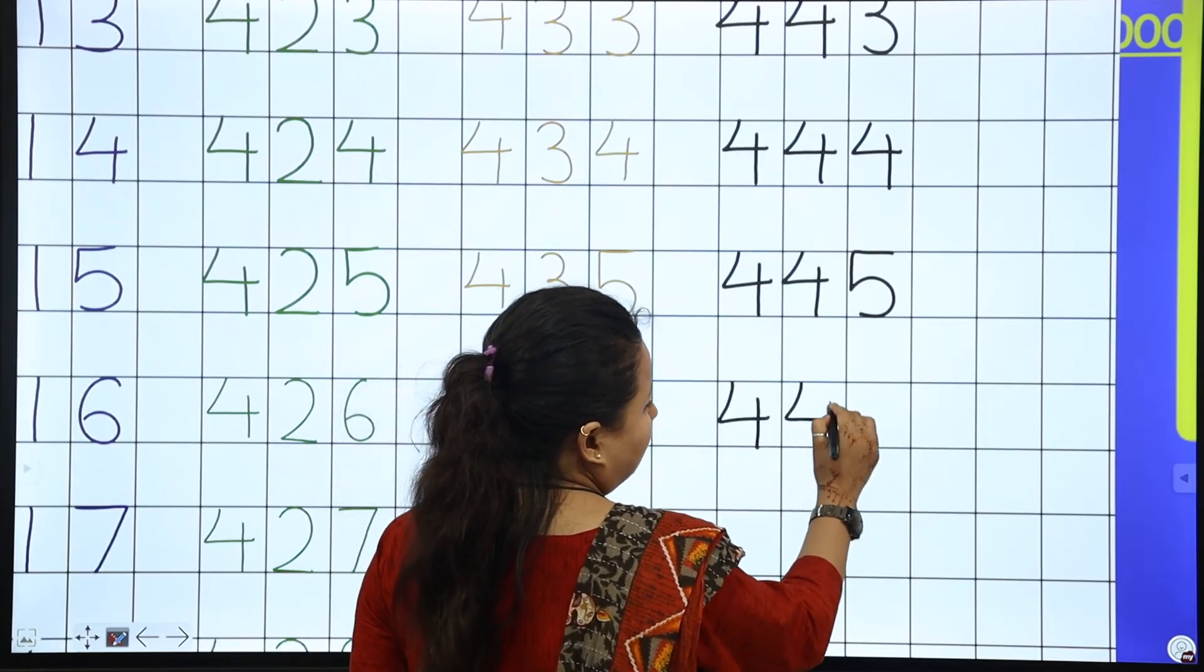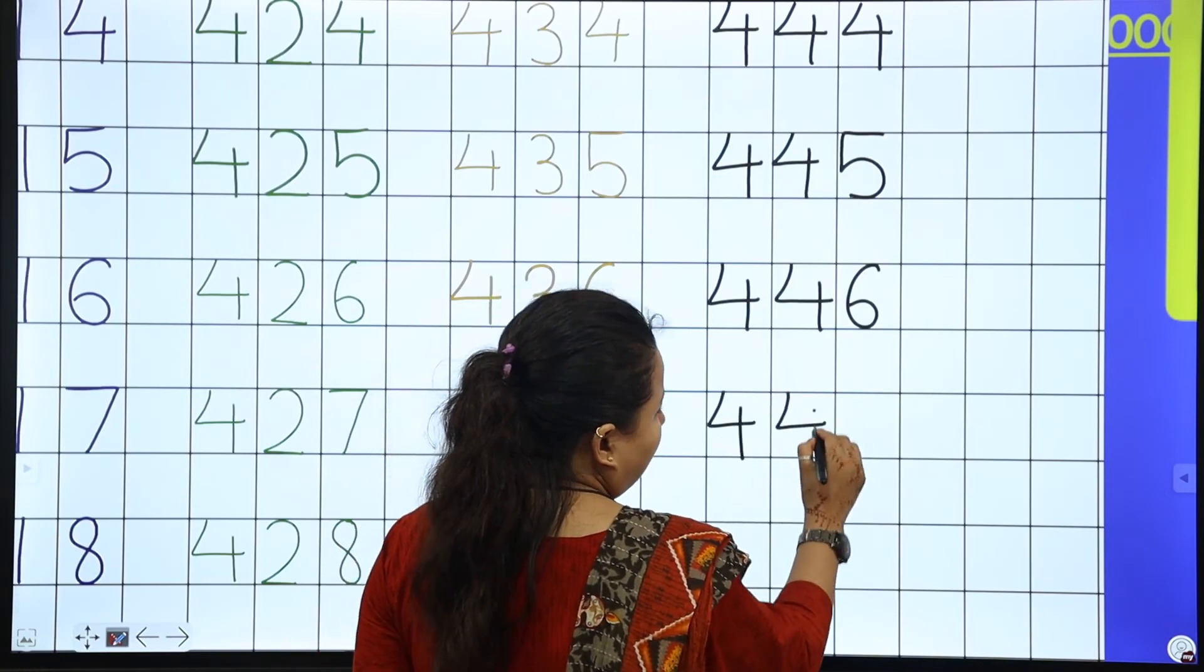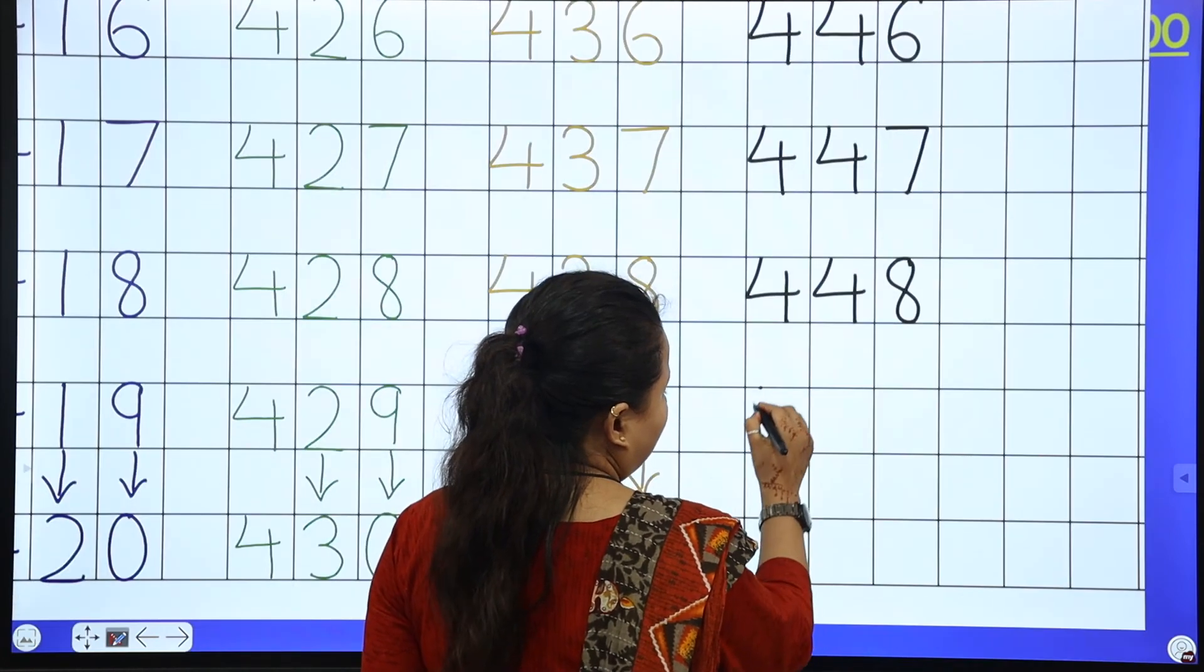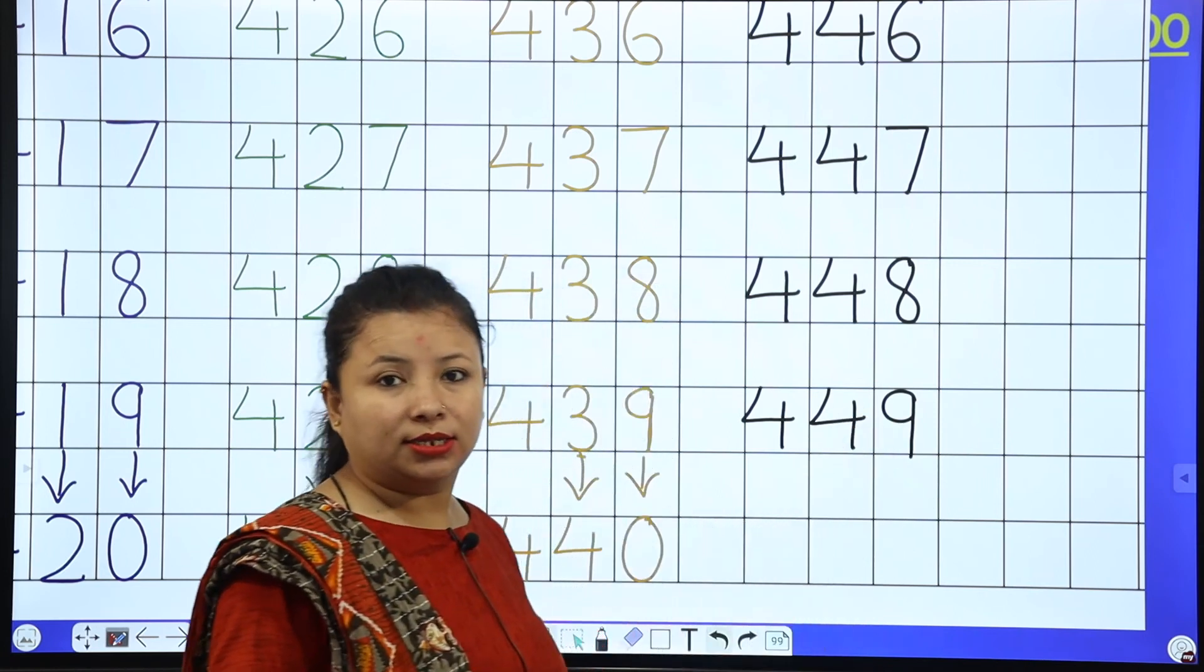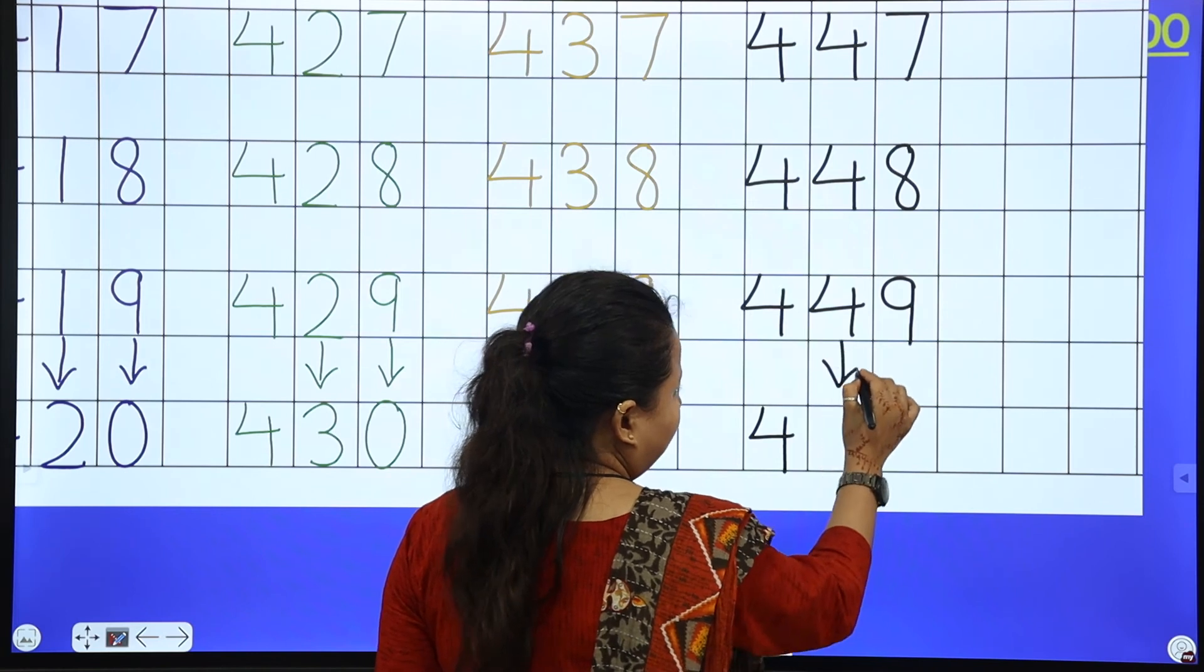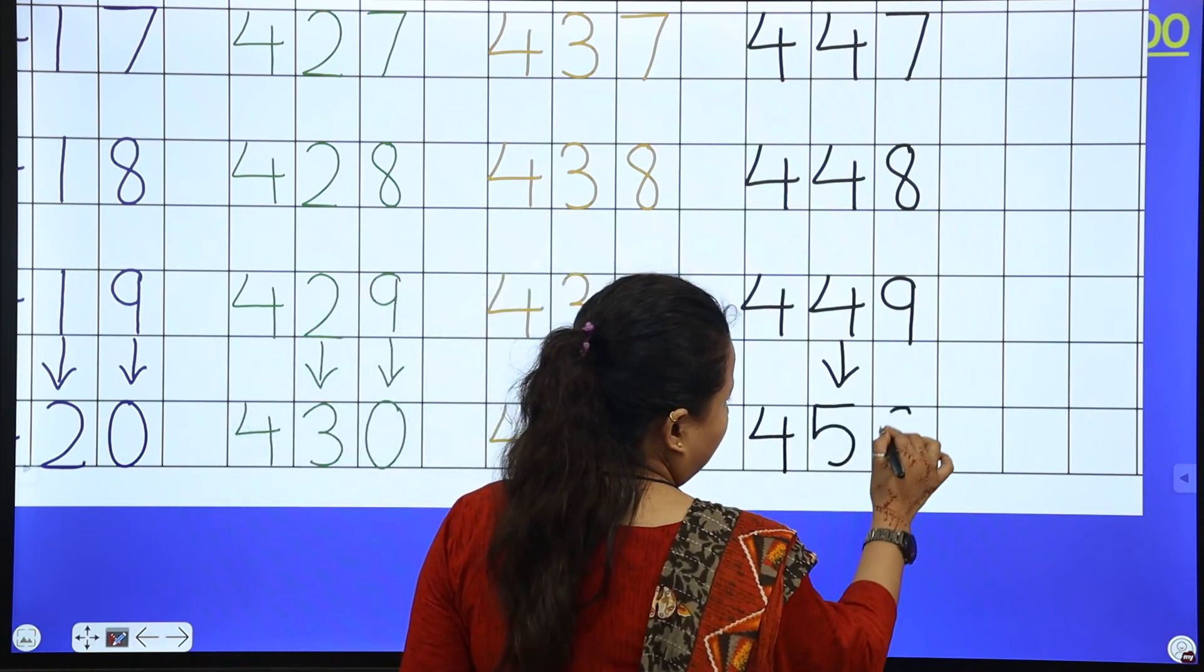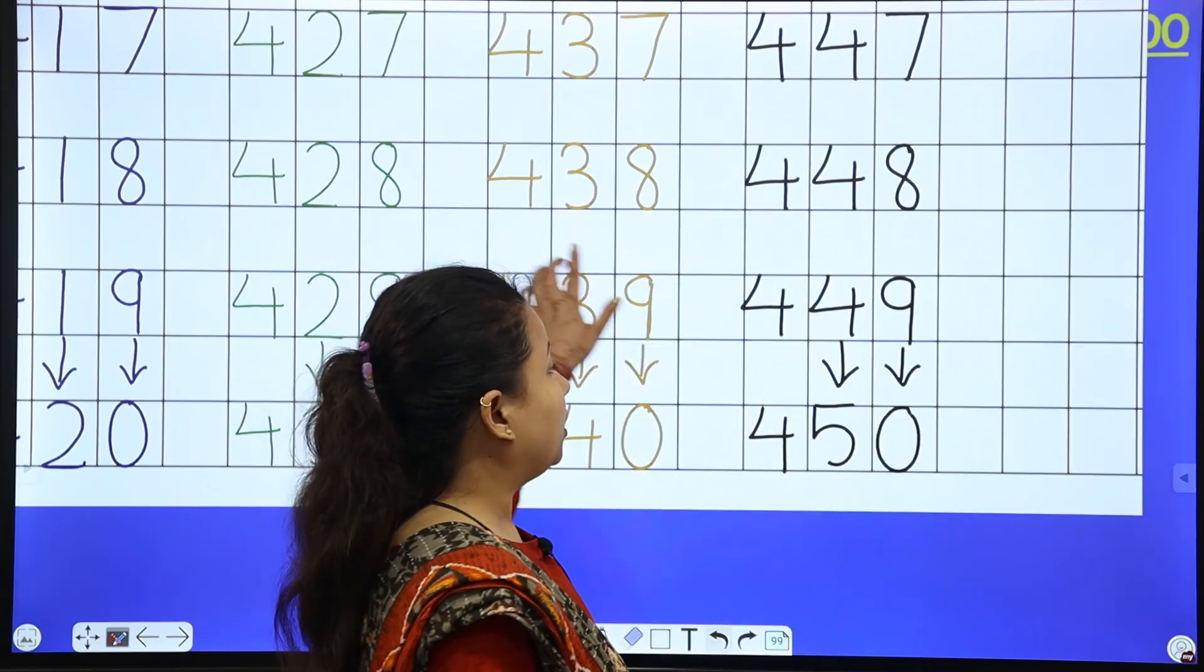446, 447, 448, 449. And the last number of this line is 400. After 4, 1, 2, 3, 4, 5. So 450. And after 9, 0 will come. That is 450.